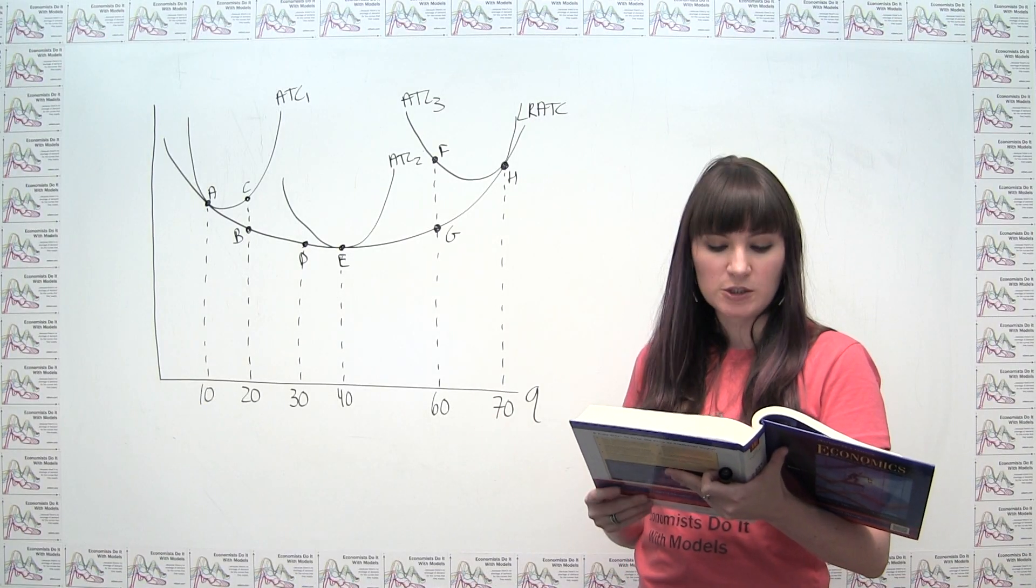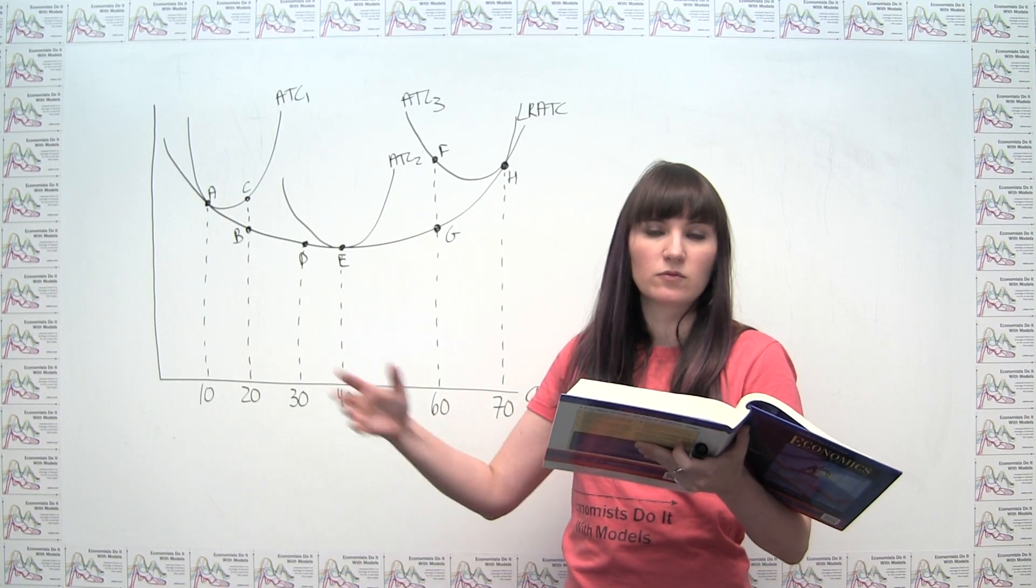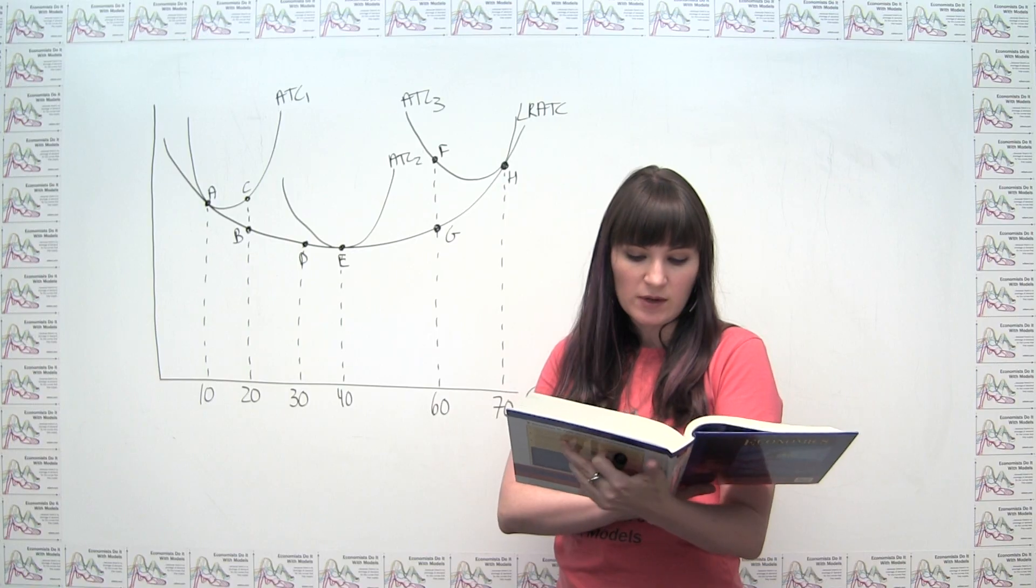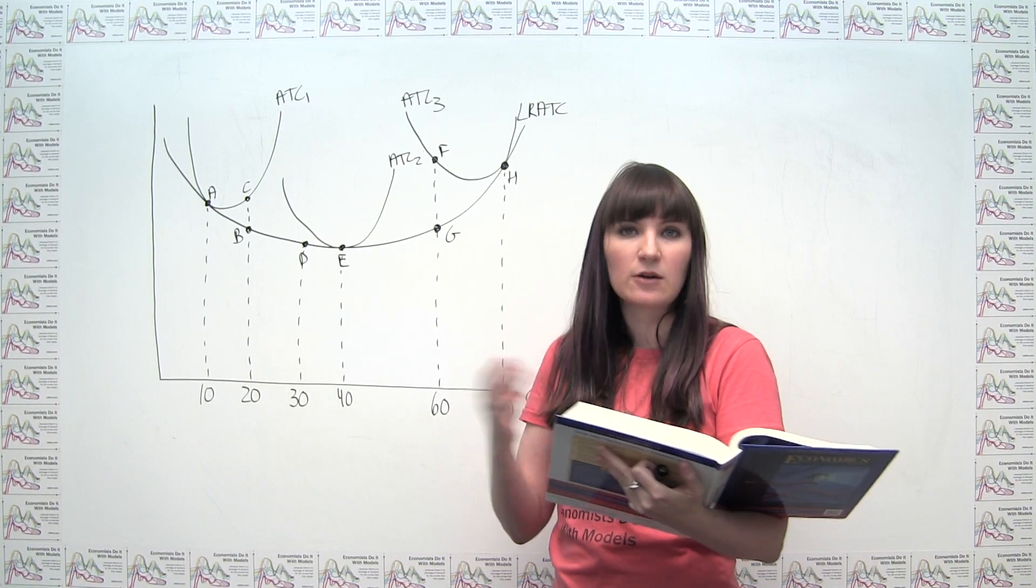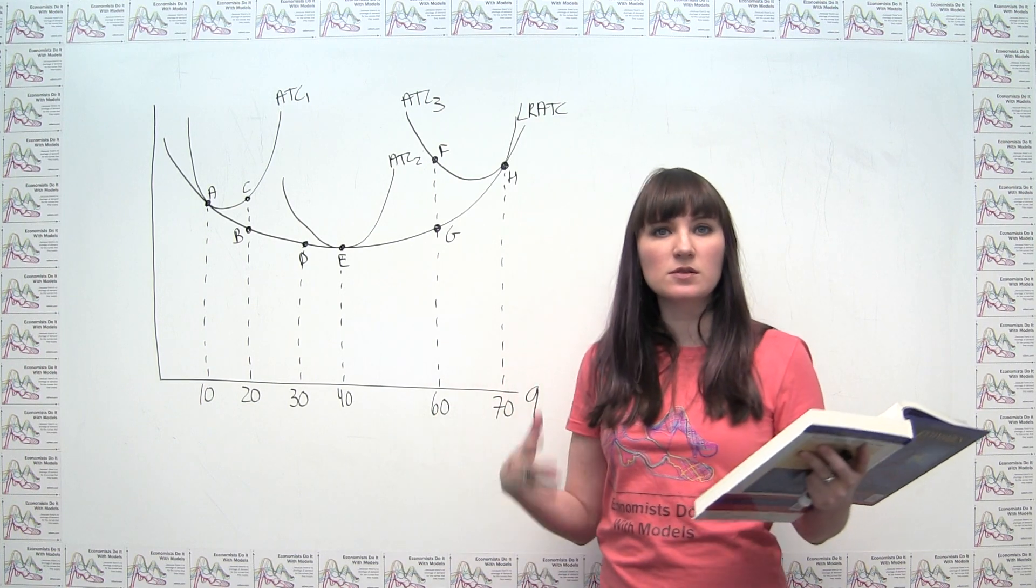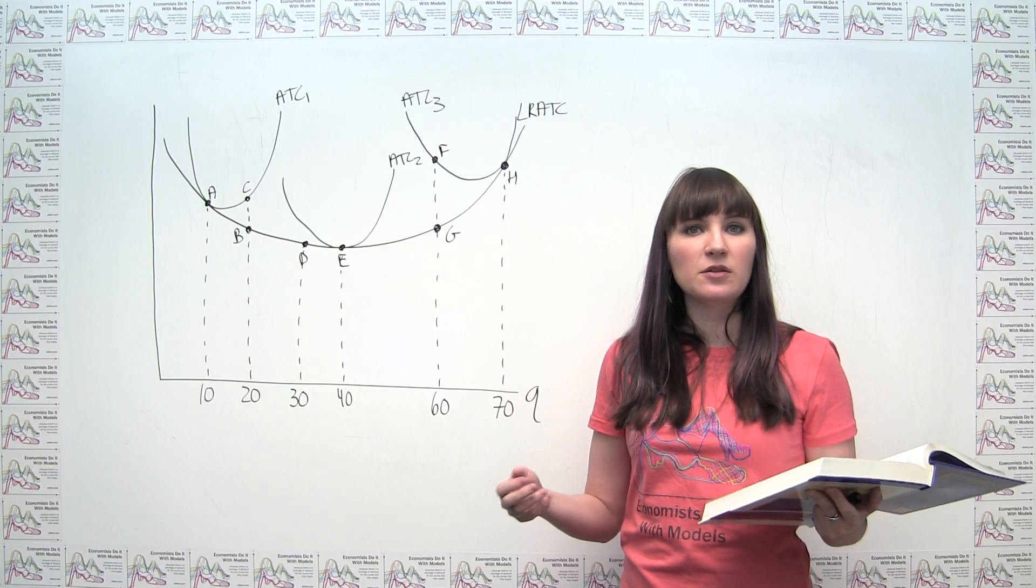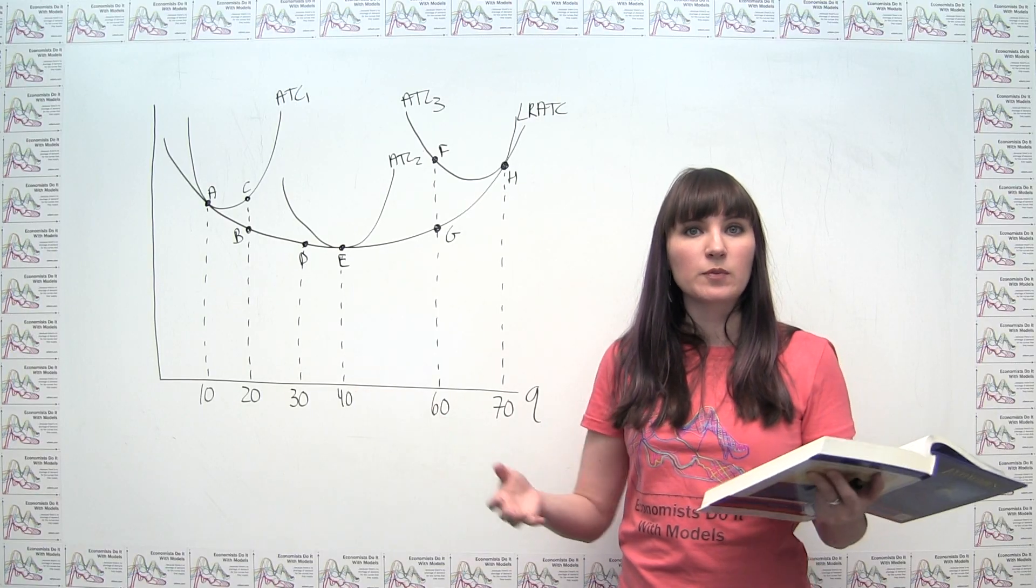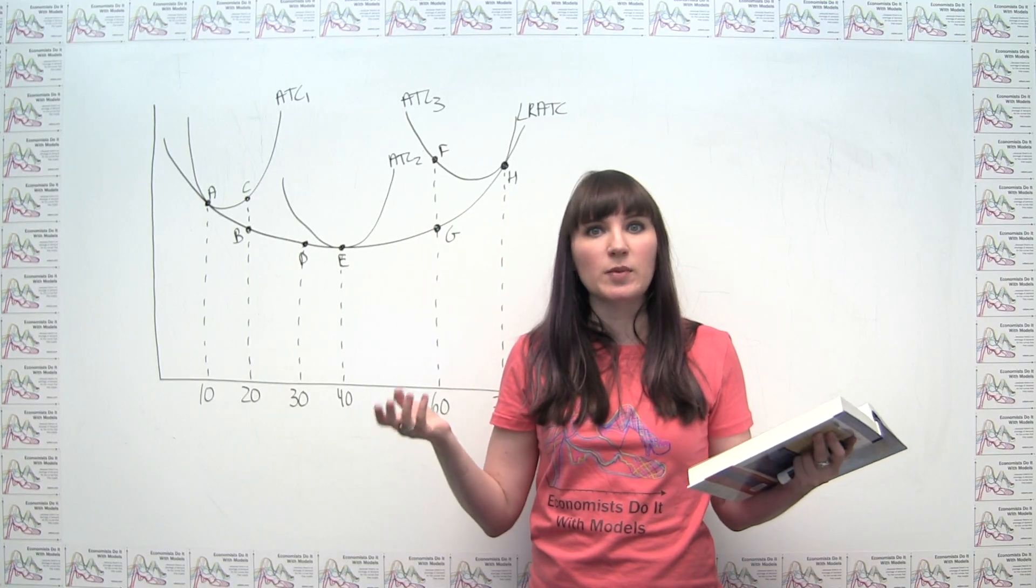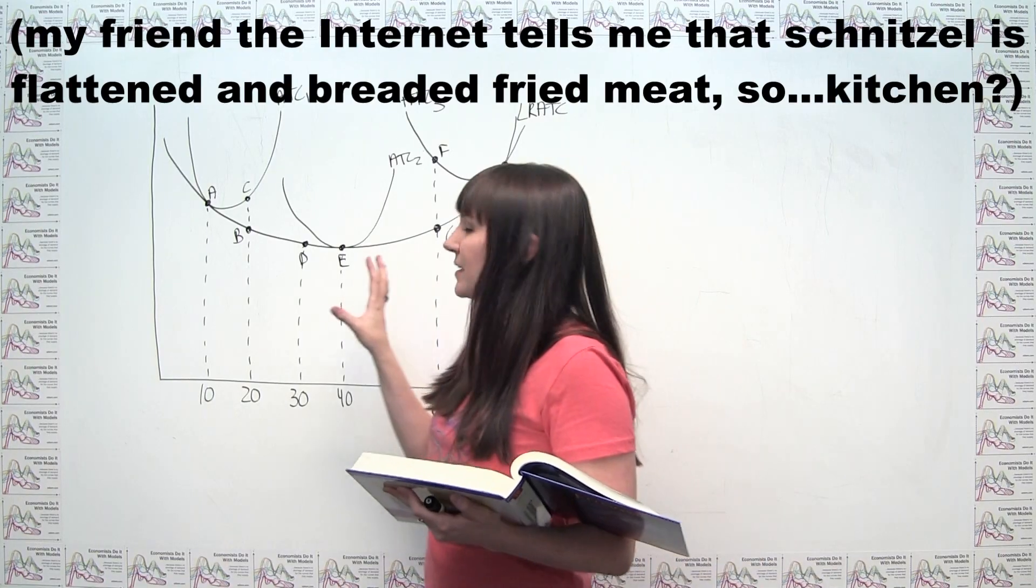The next part of the question asks, if Ludmila wants to keep producing 20 schnitzels, so she's going to do this repeatedly, not just that one time, at what point does she want to be eventually, and how can she get there? So we can look at this. And if we're continuing to produce 20 schnitzels indefinitely, then eventually we can start thinking about a long run planning horizon. We don't have to say, we're stuck with this size of, I guess in this case it would be a kitchen or bakery or something like that.